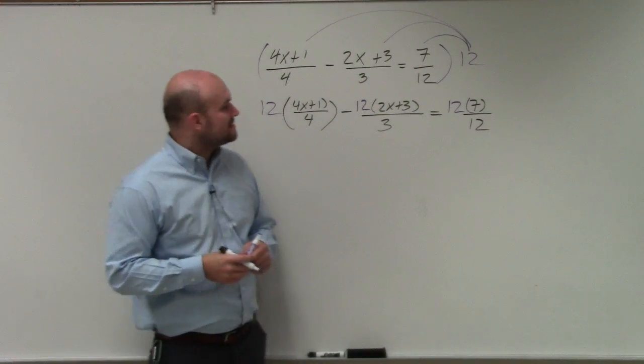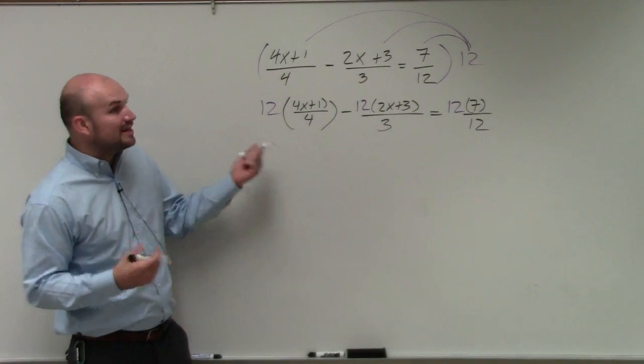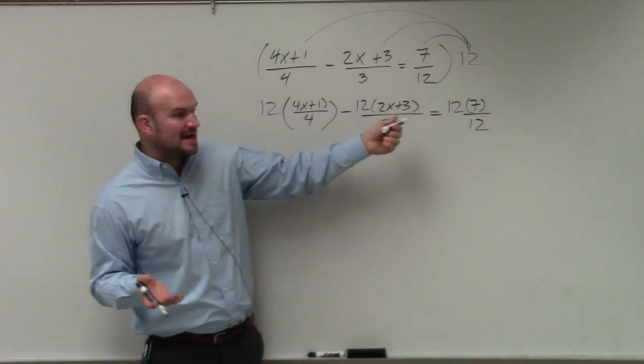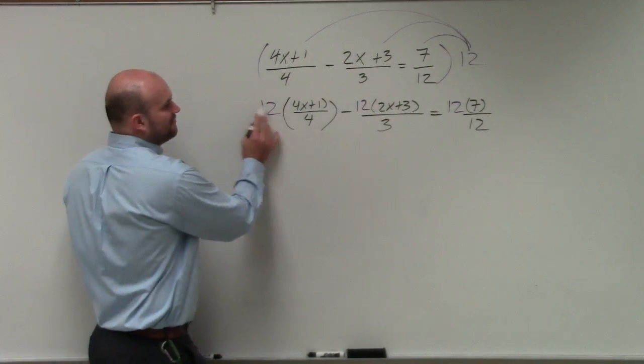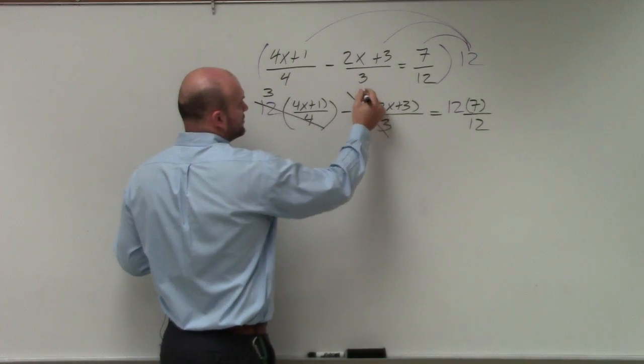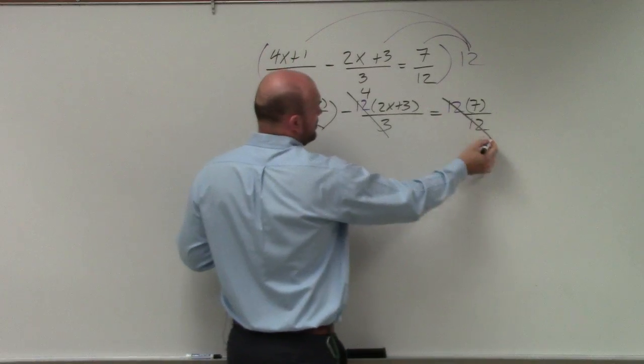So basically I'm multiplying this 12 by each and every one of these, but again, since we chose 12, because every single one of my denominators divides into that number. So 4 divides into 12, 3 times, 3 divides into 12, 4 times, and 12 divides into 12, 1 time.